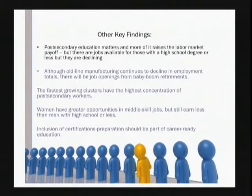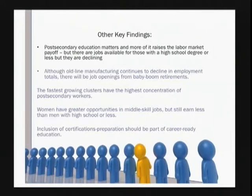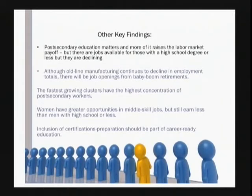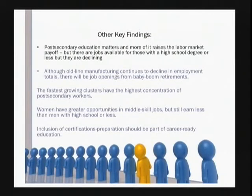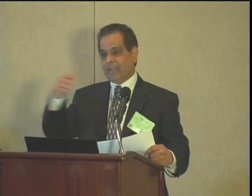Manufacturing is still declining, but the number of jobs available in 2018 is still around 2 million, which remains a large number — and it is still vital to the U.S. economy. The fastest growing clusters require post-secondary education, but one has to distinguish between fastest growing and largest demand overall. Some traditional occupations still have large demands and are in the middle-skill category. And again, the gender gap persists: women still earn less and must reach middle-skill status to approach wage parity.